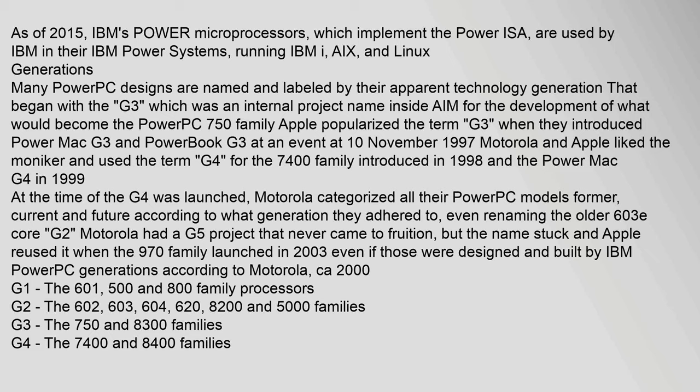As of 2015, IBM's Power microprocessors, which implement the Power ISA, are used by IBM in their IBM Power Systems running IBM i, AIX, and Linux. Many PowerPC designs are named and labeled by their apparent technology generation, beginning with the G3, which was an internal project name inside AIM for the development of what would become the PowerPC 750 family. Apple popularized the term G3 when they introduced the Power Mac G3 and PowerBook G3 at an event on the 10th of November 1997. Motorola and Apple liked the moniker and used the term G4 for the 7400 family introduced in 1998 and the Power Mac G4 in 1999.